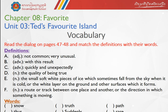Look at the words: we have snow, truth, path, those, suddenly, and fear. The definition in A is an adjective — not common, very unusual. B: with this result. C: it's an adverb — quickly and unexpectedly. D: the quality of being true. E: the small soft white pieces of ice which sometimes fall from the sky when it is cold, or the white layer on the ground. F: a noun — a route or track between one place and another, or the direction in which something is moving.